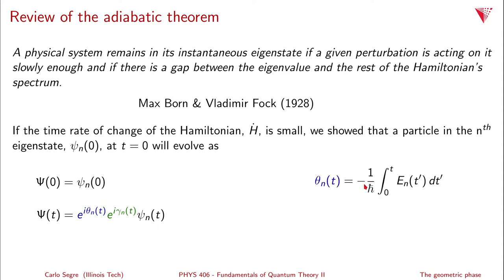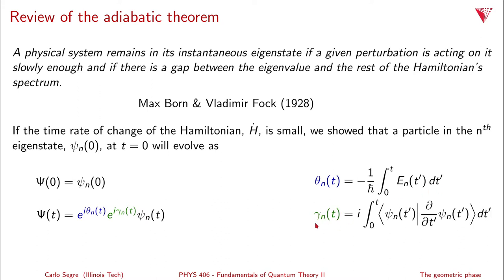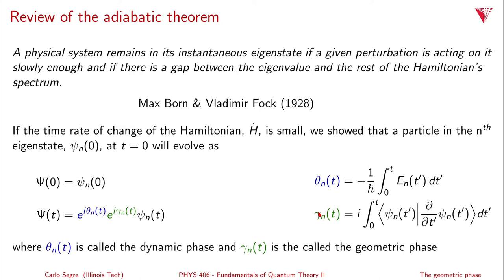Where θₙ(t) is minus one over ħ times the integral from zero to t of Eₙ(t') dt' — that's the dynamic phase factor. And the geometric phase factor γₙ(t) is i times the integral from zero to t of ⟨ψₙ(t') | ∂/∂t ψₙ(t')⟩ dt'. So θₙ is the dynamic phase, and γₙ is the geometric phase.